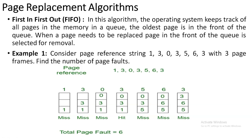This is how the First In First Out page replacement algorithm works. Finally, we calculate the total page faults by counting the number of misses. There are six misses in this problem, so the total page fault count is six.